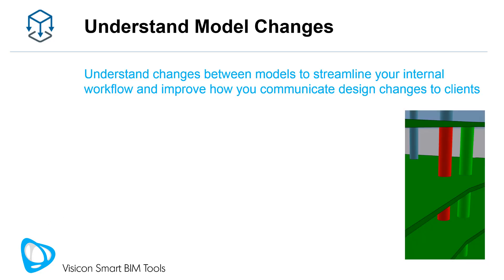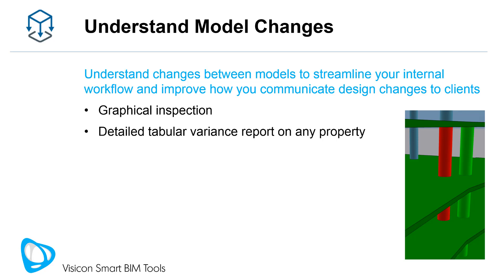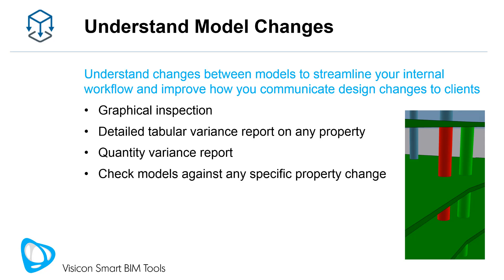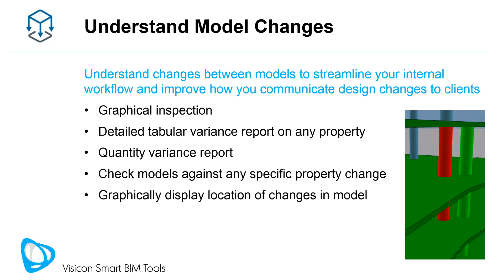Use Visicon's change management features to better understand changes between your internal model versions or use it to better communicate design changes to clients. Merge two models and graphically inspect changes. You can also run Visicon's compare feature. The quantity variance report summarizes how quantities changed between model versions, something many of your clients would be interested in knowing. You can also configure the variance report to check against any specific property change — for example, did the length of any beam change? You have the choice of creating tabular variance reports or having Visicon display the changes graphically on your model.